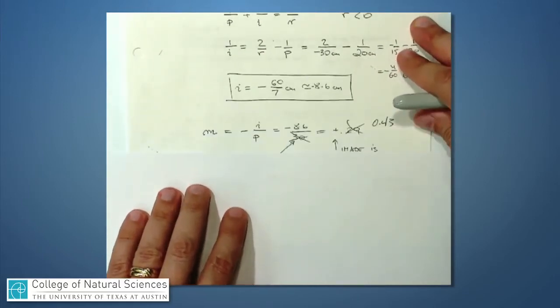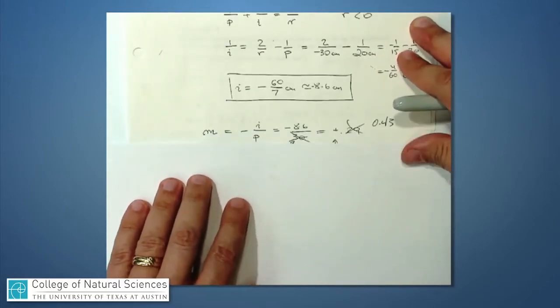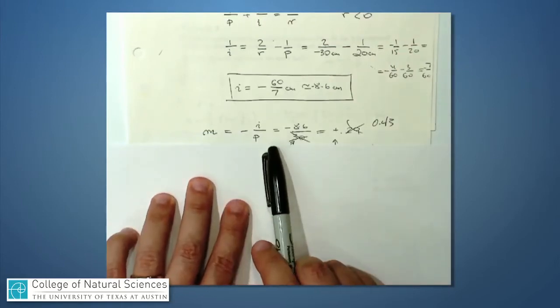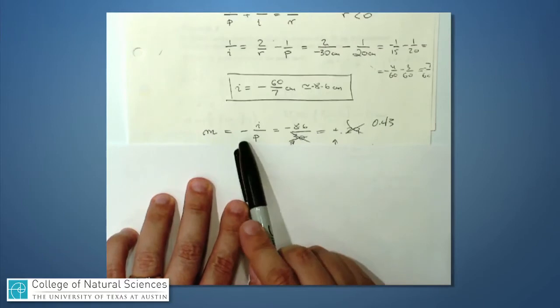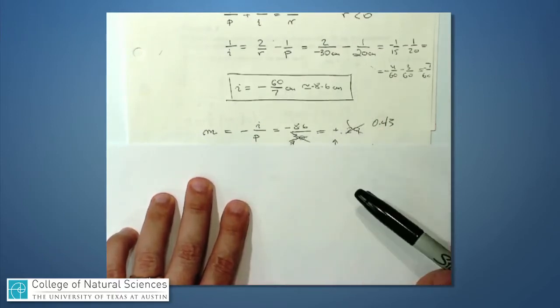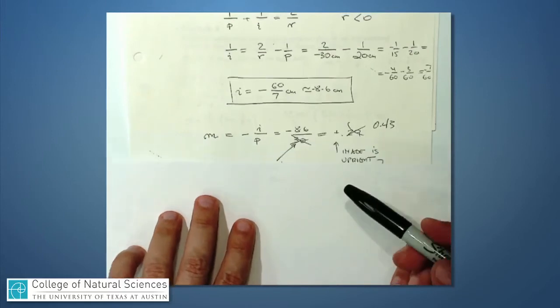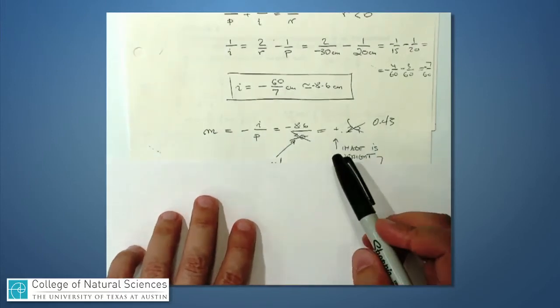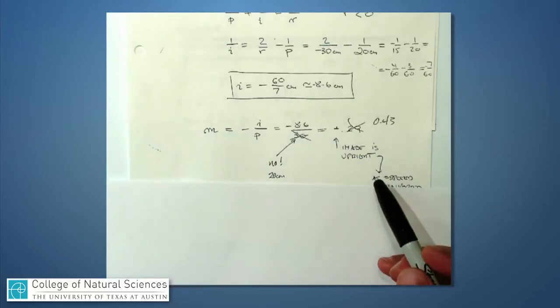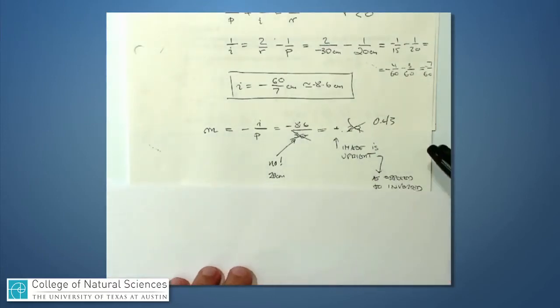The other important number is the magnification. Magnification, if you remember, is always minus i over p. So always put a minus sign there and then put in the value for i that you just got, which was minus 8.6, and p is 20 centimeters. And what I find is that the image magnification is positive 0.43.